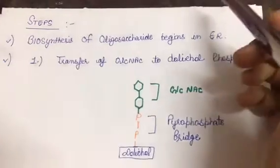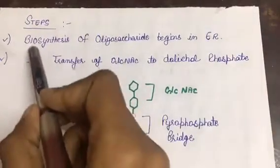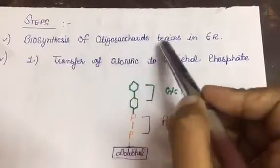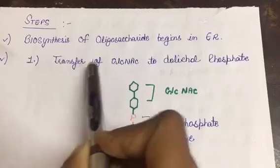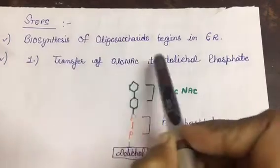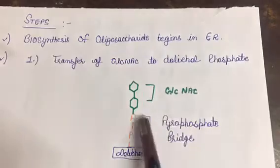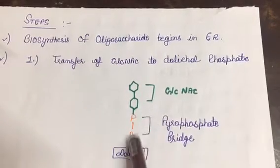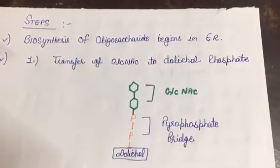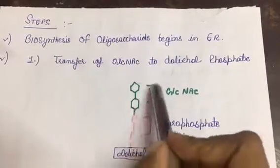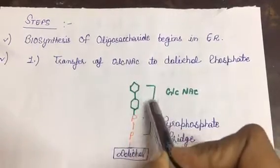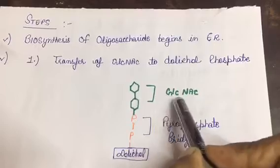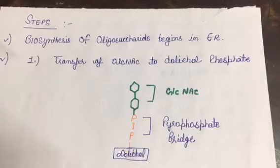Now further, what are the steps? Biosynthesis of oligosaccharide begins in endoplasmic reticulum as I told you earlier, and then transfer of N-acetylglucosamine onto dolichol phosphate. This pyrophosphate bridge, this phosphate, this dolichol. Now N-acetylglucosamine attaches to this dolichol. Five mannose residues will be added later on after this attachment.